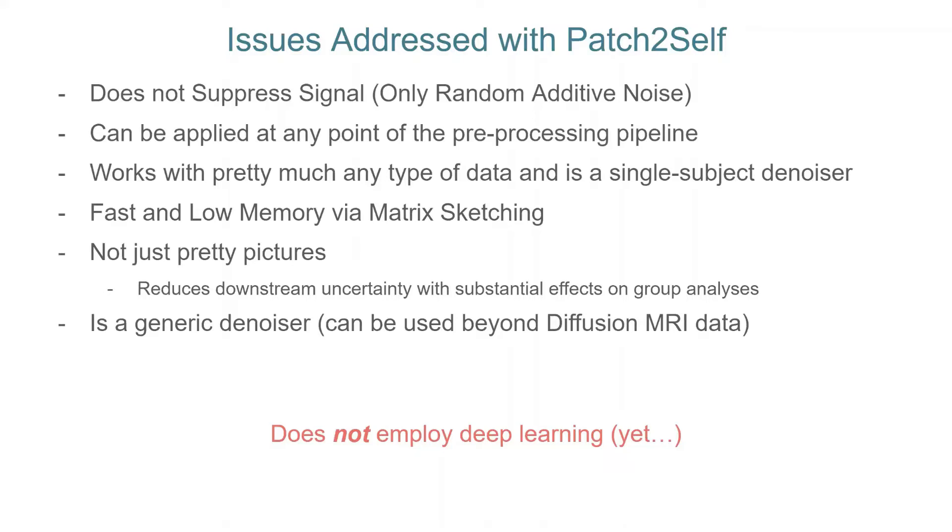It works pretty much with any type of data that is a diffusion acquisition, and it is a single subject denoiser. It is fast, it has low memory, we employ matrix sketching, which you will learn about in the next part. It's beyond just pretty pictures, because in diffusion MRI, we don't care about how it looks visually as much as how it affects downstream tasks. And lastly, it's a generic denoiser, it works even beyond diffusion MRI.